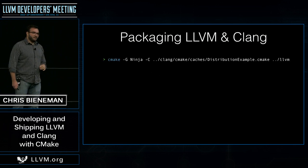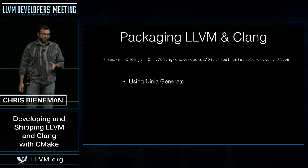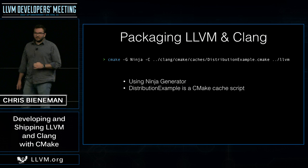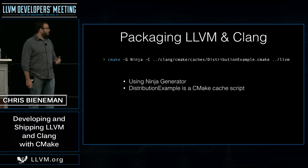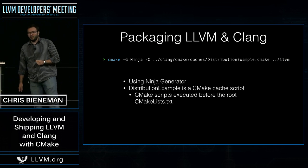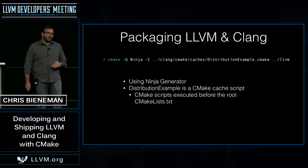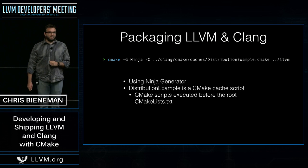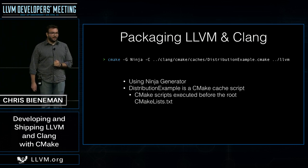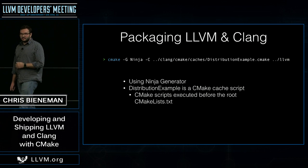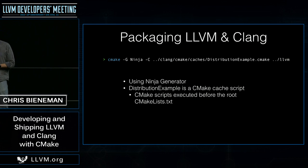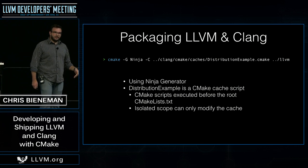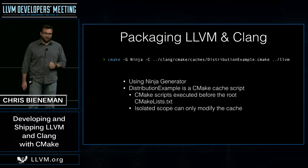The first command, the CMake command, is using the Ninja generator and a CMake cache file named distribution-example, which lives in the Clang tree today. CMake cache files are scripts written in CMake that run before CMake starts evaluating your build settings in the top-level CMakeLists file. They can set settings on the CMake cache that persist through the build, and they're executed in isolated scope, so variables set in them are not exposed anywhere else.